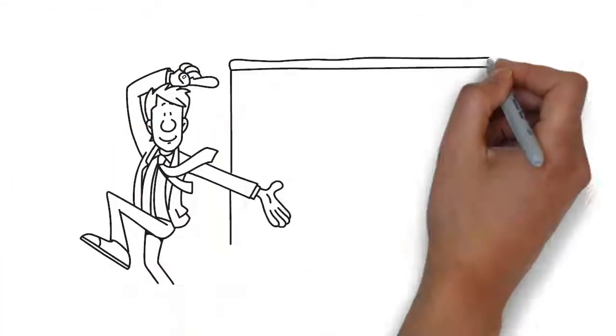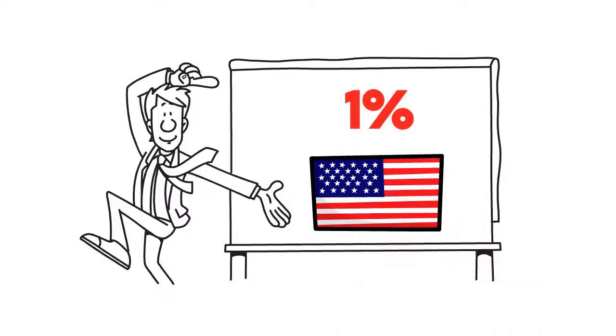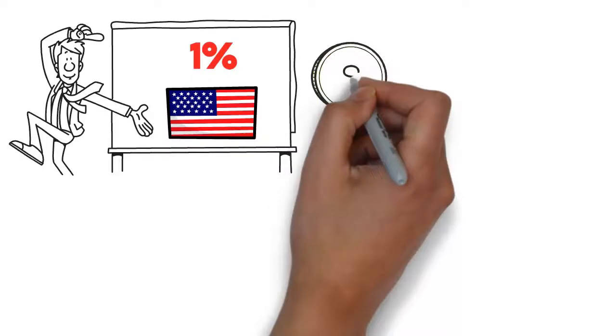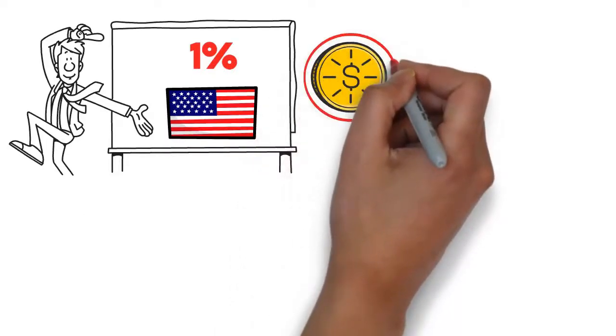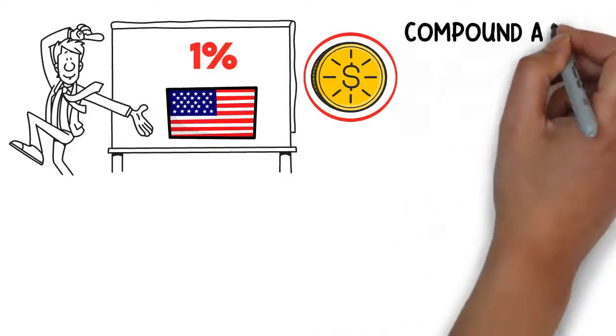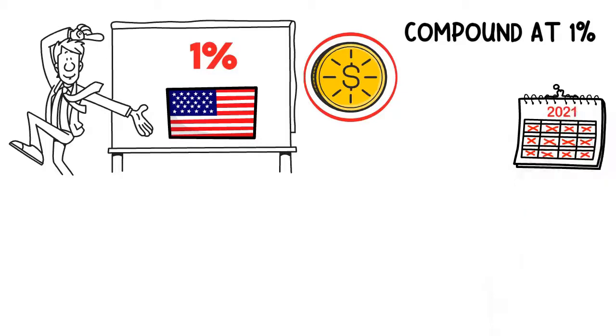Now, here's a mind-blowing visual for you about 1%. Suppose in 1776, when America was formed, we deposited $1. We'd make no more deposits, and we just let the $1 compound at 1% per month until the year 2021. In 2021, we'd have over $5 trillion.